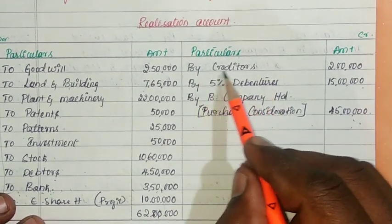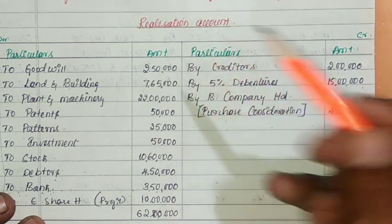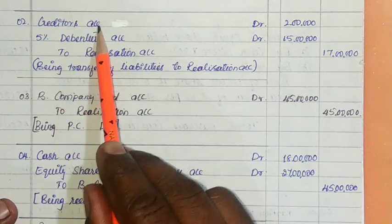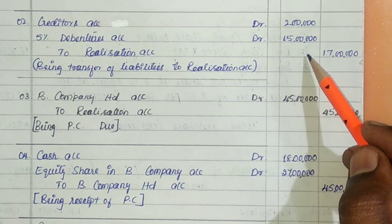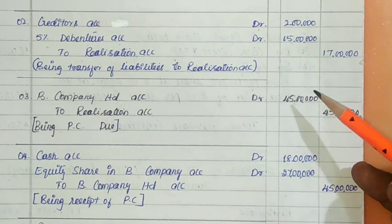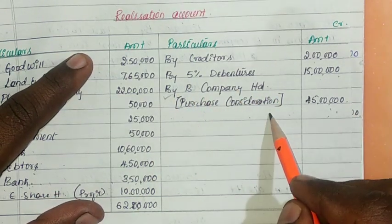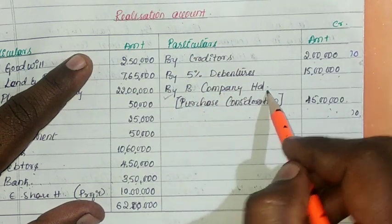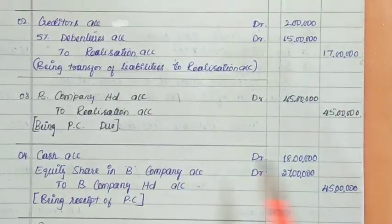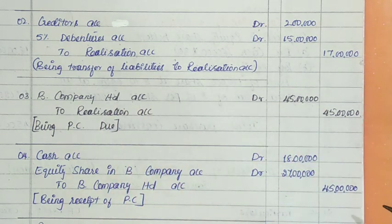Entry number two: transfer of liabilities — creditors account debit, 5% debentures account debit, to realization account. This records the transfer of liabilities. Entry number three: purchase consideration transfer — B company limited account debit to realization account, 45 lakhs. This records the PC receivable from B company.